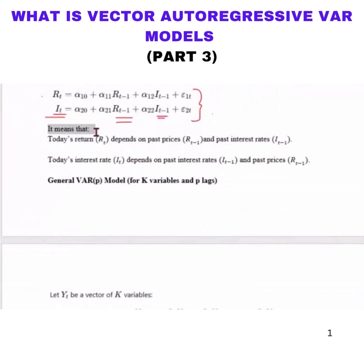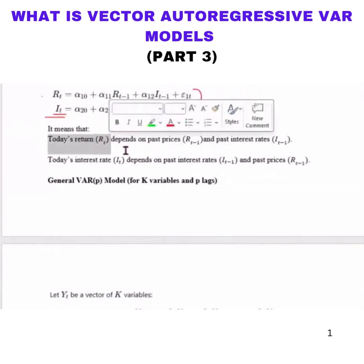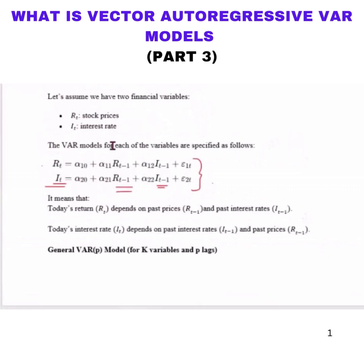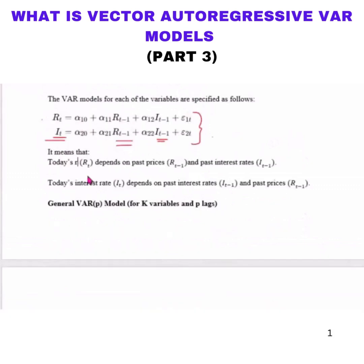It means that today's return or today's stock prices RT - today's stock prices depends on the past prices RT minus one, RT minus two, RT minus three, etc.